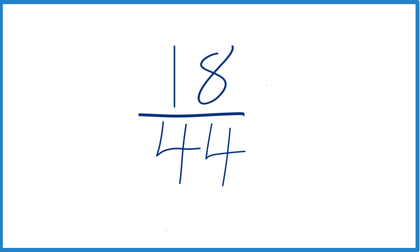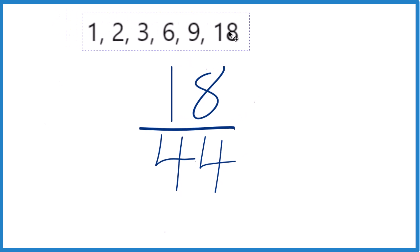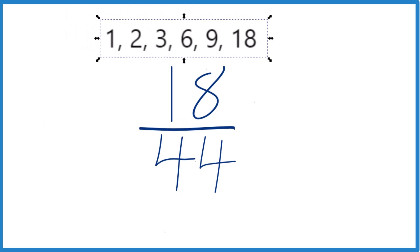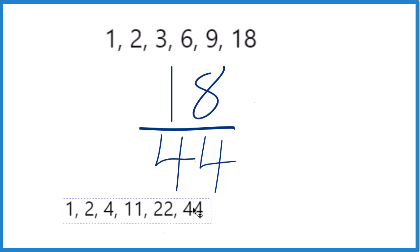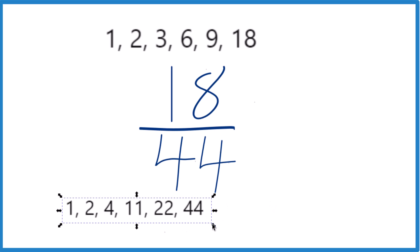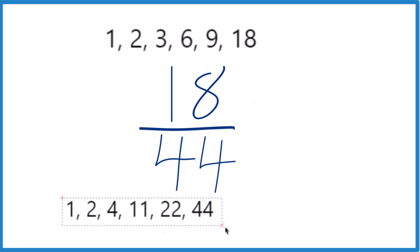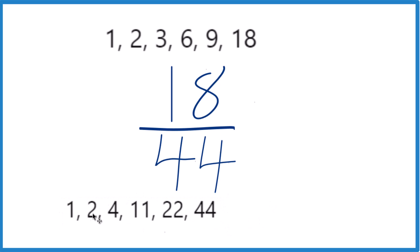The factors for 18: we have 1 times 18, 2 times 9, and 3 times 6. For 44, we have 1 times 44, 2 times 22, and 4 times 11.